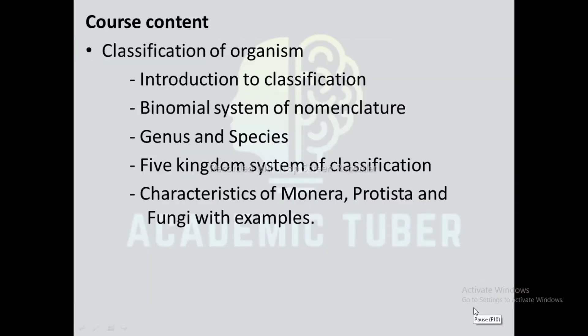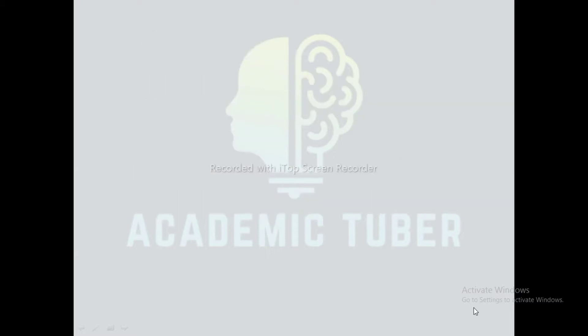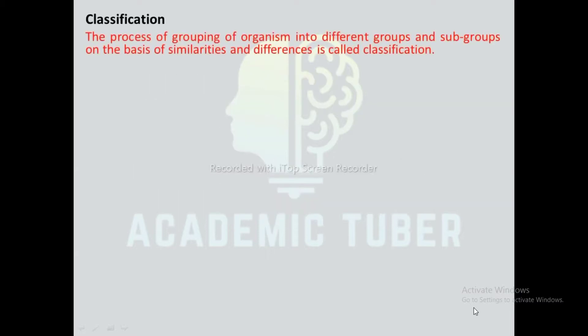Here in this unit, we are going to discuss classification, binomial system of nomenclature, genus and species, five kingdom system of classification, characteristics of monera, protista and fungi with examples. The process of grouping of organisms into different groups and subgroups on the basis of similarities and differences is called classification.